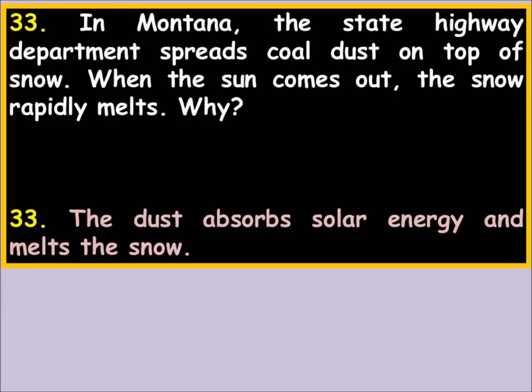In Montana, the State Highway Department spreads coal dust on top of snow. When the sun comes out, the snow rapidly melts. Why? The dust is black and absorbs solar energy, then the snow melts. It seems like a very polluting way of doing things.